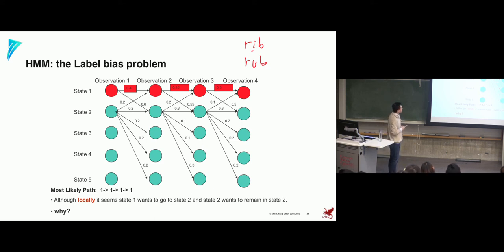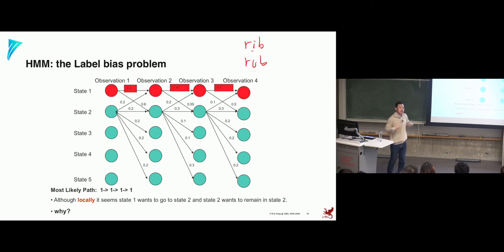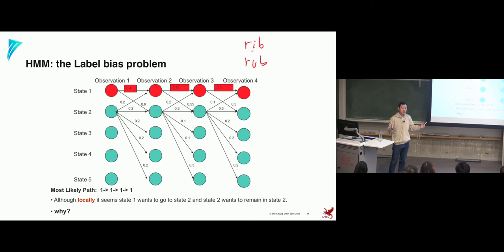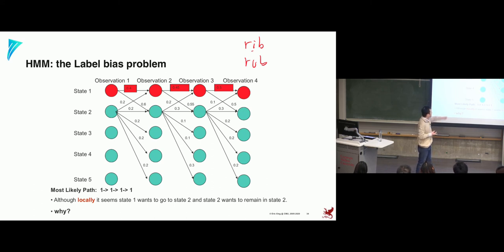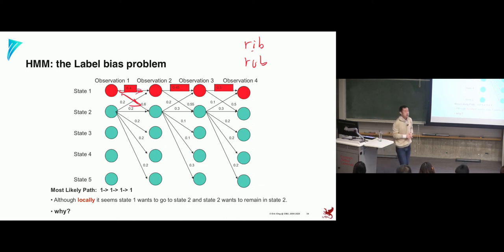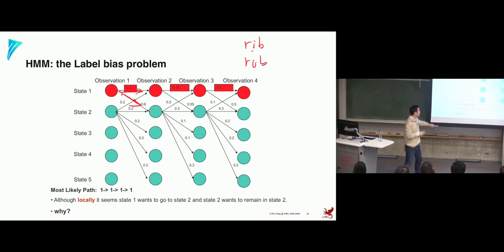Instead of locally normalized probabilities, we use global potentials: assign potential 20 here and 30 there — comparable numbers globally — rather than local probabilities that must sum to one locally. Then define the overall probability using a global partition function Z for normalization. This is only achievable by turning the model into an undirected graphical model, leading to the Conditional Random Field. The key difference: HMM uses factorization over local conditionals and marginals; CRF directly defines the conditional P(Y|X) using weighted potential functions.